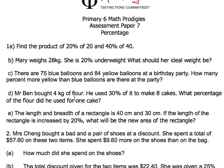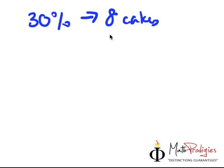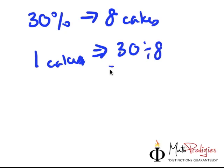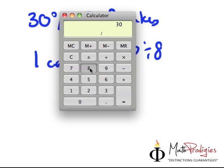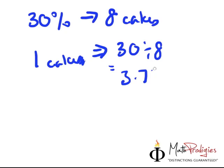And let's do the next question. The next question is, for part D, Mr. Ben bought 4 kilograms of flour. He used 30% of it to make 8 cakes. What percentage of the flour did he use for 1 cake? So, now, this actually is a trick question. You can actually do it in a few steps only. So, you can take 30%. He used it for how many cakes? For 8. So, 1 cake equals to 30 divided by 8. Which gives me 3.75%. That's it. That's actually how you do this very easily.